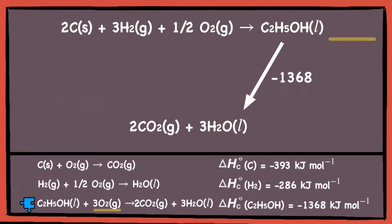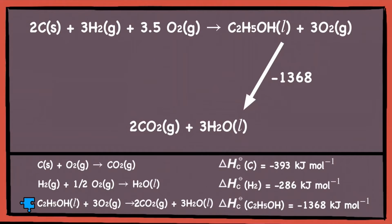Notice that the three moles of oxygen is not there in our main equation. So what we can do is add three moles of oxygen to both sides of the equation. The reason why we add to both sides is because we must be fair — we cannot just add to the right-hand side and leave out the left-hand side, or else the equation will not be balanced. After adding the three moles of oxygen to both sides, we can simplify it, and we have successfully pieced the third equation into the energy cycle.